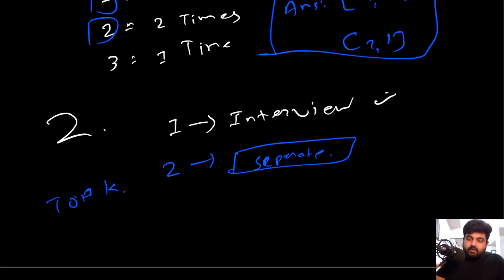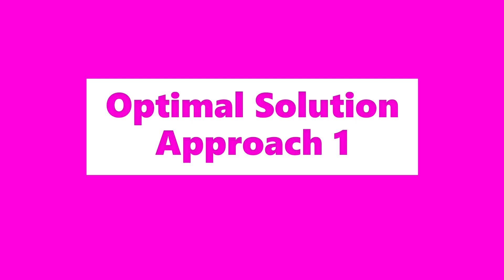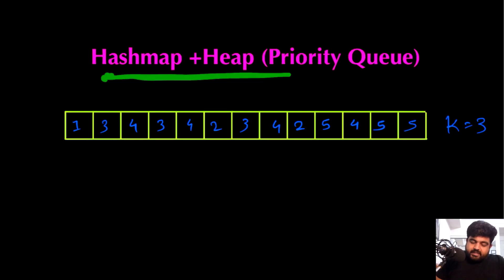So let me know in the comments whether you want to learn this second approach — if you do, I will make a separate video. We are actually going to use the combination of a hash map and a heap in order to achieve the top k elements.